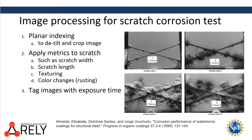Image processing for the scratch corrosion test will first involve planar indexing to detilt and crop the image so that only the relevant area of the image is used for classification. Then we'll apply metrics to measure the scratch, such as the scratch width, length, texturing, and color changes. Then we'll tag the images with the exposure time.